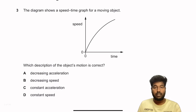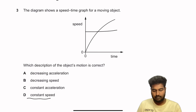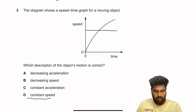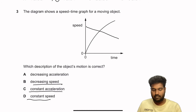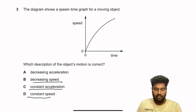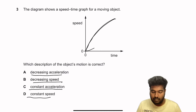Question 3: A speed-time graph for a moving object. Constant speed looks like a straight horizontal line. Constant acceleration means speed increases linearly. Decreasing speed slopes downward. Decreasing acceleration means the gradient keeps decreasing — the curve flattens over time. That matches the graph shown, so decreasing acceleration is the correct description.